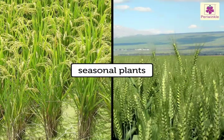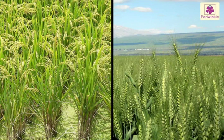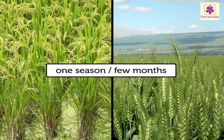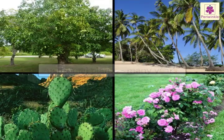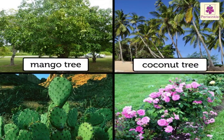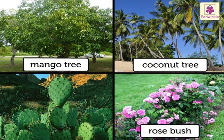Plants also have different lengths of life. Seasonal plants like rice and wheat live for one season or a few months only. Perennial plants like the mango tree, coconut tree, rose bush, and cacti live for many years.